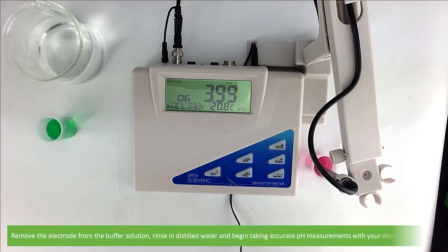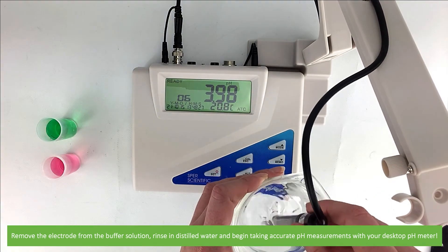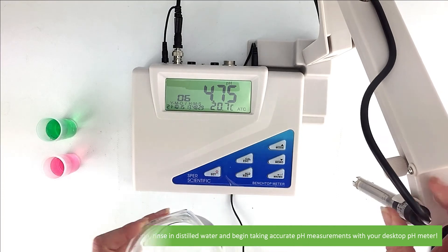Remove the electrode from the buffer solution. Rinse in distilled water and you can now begin to take accurate pH measurements with your desktop pH meter.